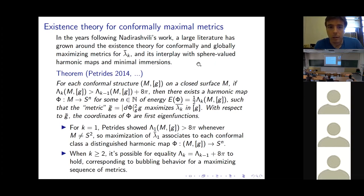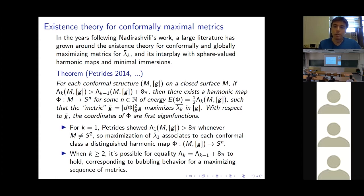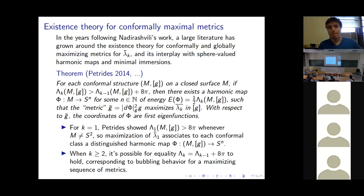Regarding a question from the chat about the dimension n: classical results from the 1970s–80s — starting with work of Chung — allow one to estimate the maximum multiplicity of the k-th eigenfunctions for a surface in terms of its topology. The dimension n corresponds to one plus the maximum multiplicity of the k-th eigenfunctions, minus one.